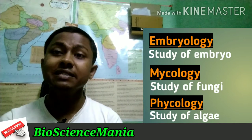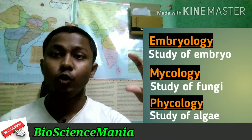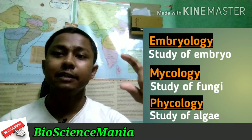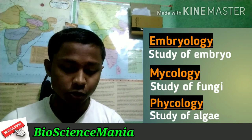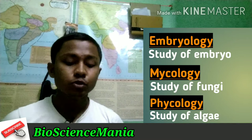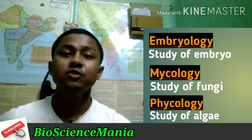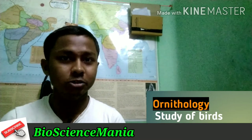Fungi — for example, Agaricus — is what mycology covers. The branch of biology where we discuss fungi is known as mycology. Next, phycology is the branch of biology where we study algae, like the primitives of plants. Next, ornithology is the branch of biology where we study birds.